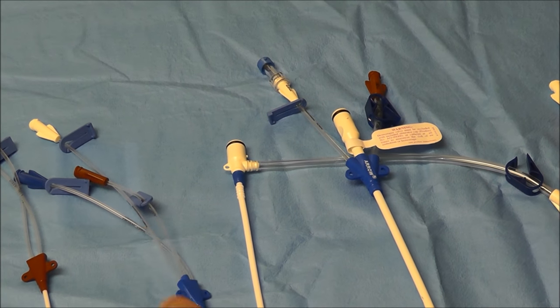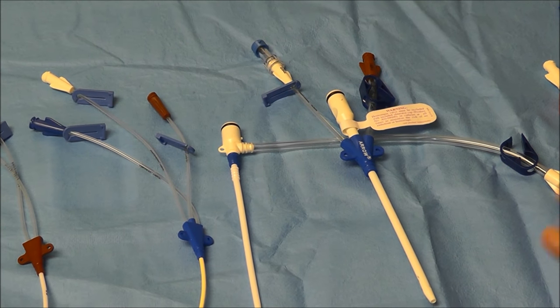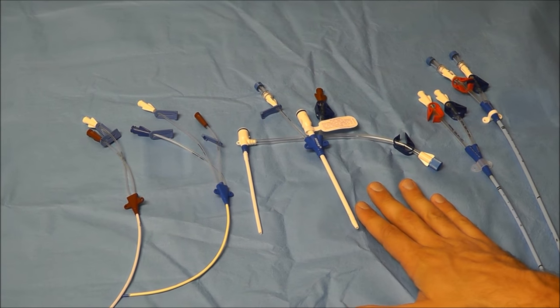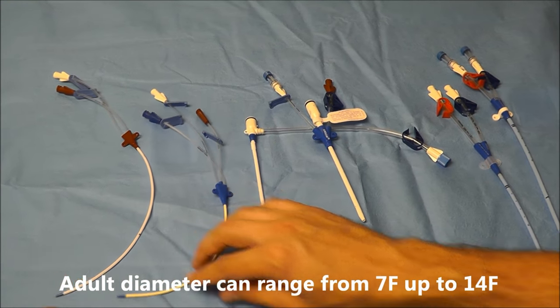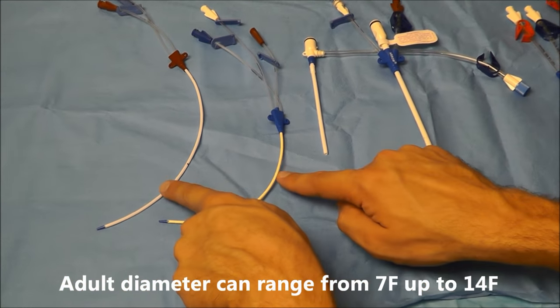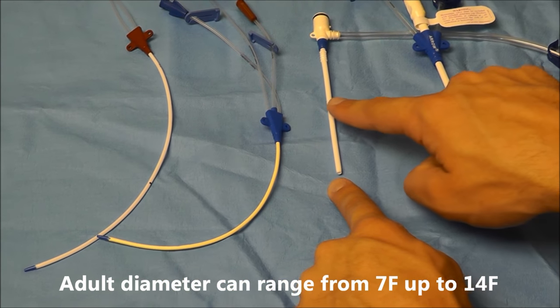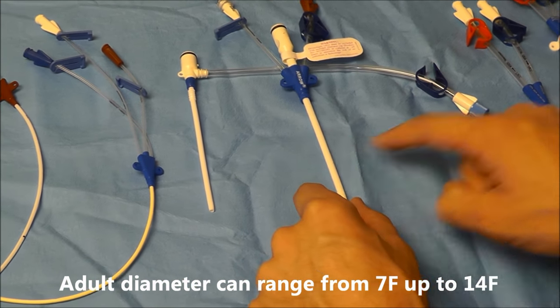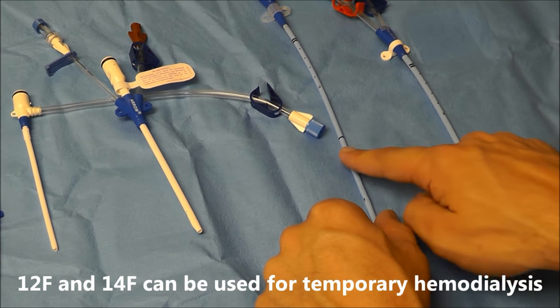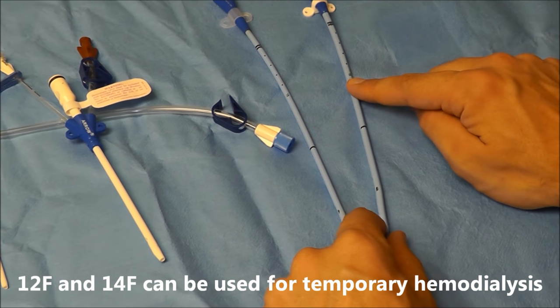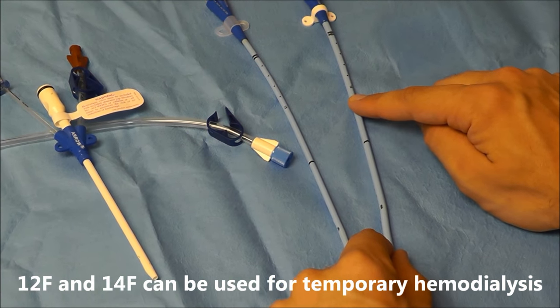The next thing that you're going to notice about these central lines is that some lumens are bigger than others. Typically the smaller types of lumens are around 7 French, then they go up to 8.5 French, 9 French, you can get up to 12 French and even 14 French on how big these lines can get.